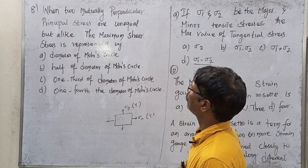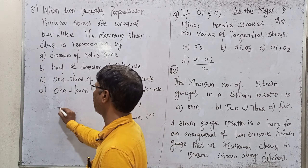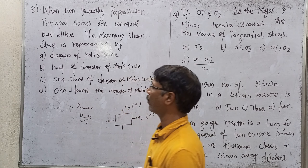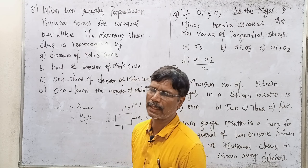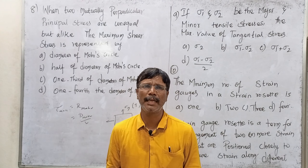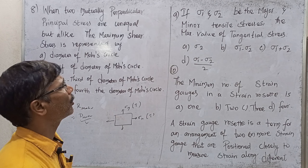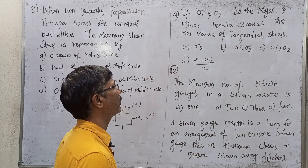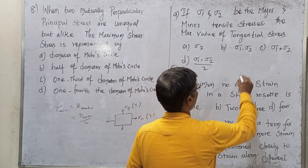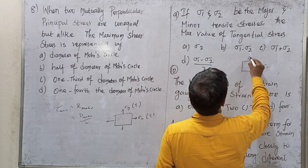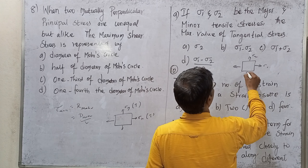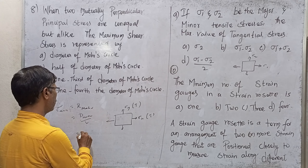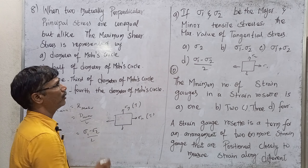The maximum shear stress is represented by the radius of the Mohr's circle. Tau max equals the radius of the Mohr's circle. The radius of the Mohr's circle is the diameter divided by 2, so half the diameter of the Mohr's circle is the answer. Tangential stress is the same as shear stress. The maximum value of tangential stress uses sigma 1 and sigma 2 — maximum principal stress minus minimum principal stress — so option D is the right answer.